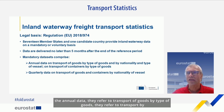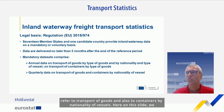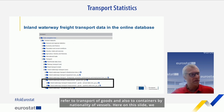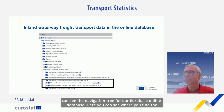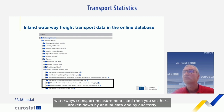The annual data refer to transport of goods by type of goods, transport by nationality, type of vessel, and transport of containers by type of goods. The quarterly data refer to transport of goods and containers by nationality of vessels. In the Eurobase online database navigation tree, you can find the inland waterways statistics under transport, then inland waterways transport, then inland waterways transport measurements, broken down by annual and quarterly data.